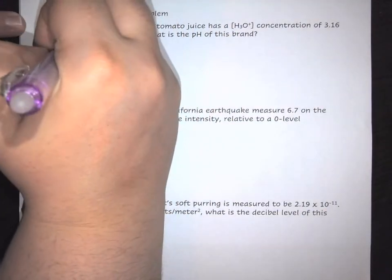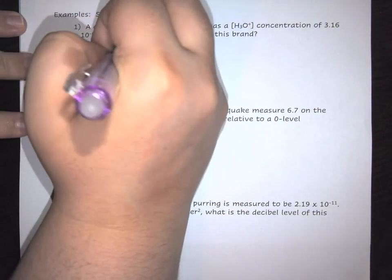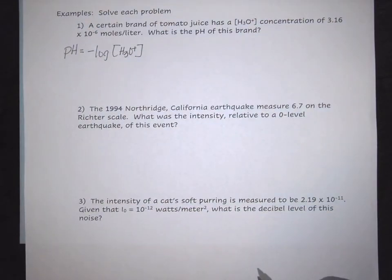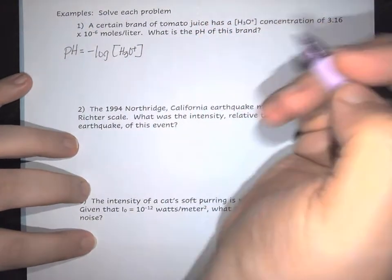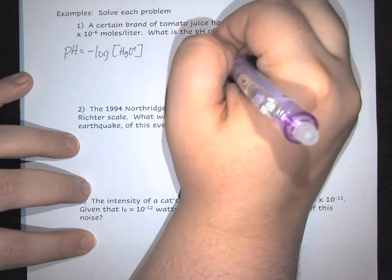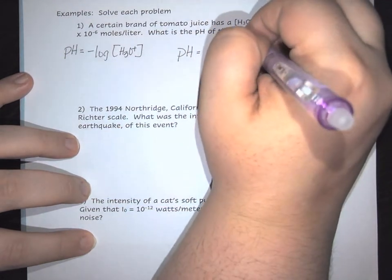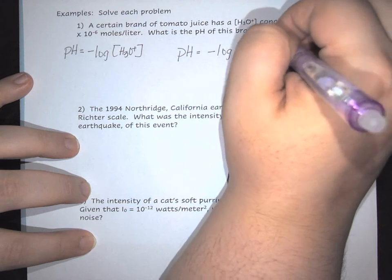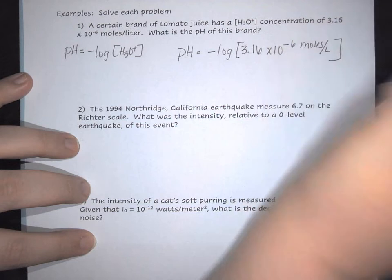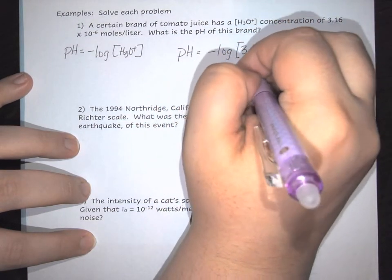We have to use our pH equation, which is the negative log of your concentration. In this case, it comes down to simply plugging in your information. We're going to take the negative log of 3.16 times 10 to the negative 6 moles per liter, and this gives you a pH of 5.5.